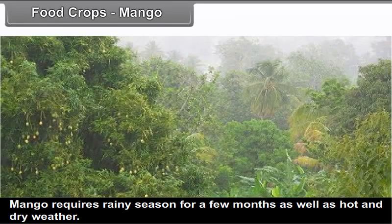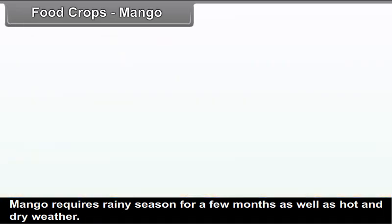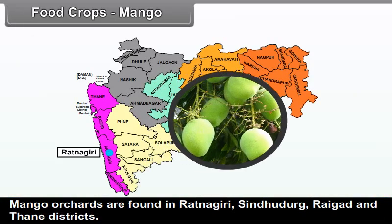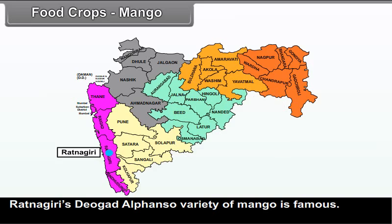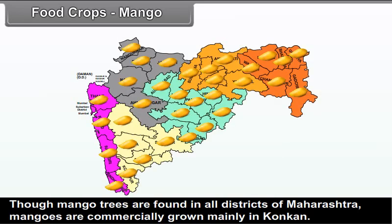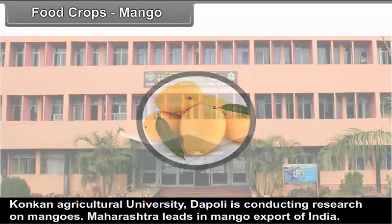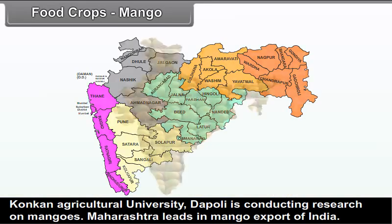Mango: Mango requires a rainy season for a few months as well as hot and dry weather. Mango orchards are found in Ratnagiri, Sindhudurg, Raigad, and Thane districts. Ratnagiri's Devgad Alphonso variety of mango is famous. Though mango trees are found in all districts, mangoes are commercially grown mainly in Konkan. Konkan Agricultural University, Dapoli, is conducting research on mangoes. Maharashtra leads in mango export from India.